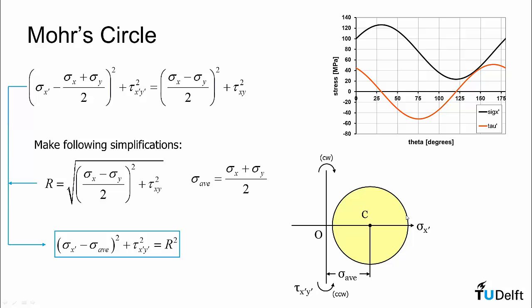Now each point along the radius or around the circumference of this circle represents a stress state with a given normal stress and a given shear stress. And as we rotate around the circle, it's the same as rotating in physical space, but it is twice the angle in the circle as it is in physical space.